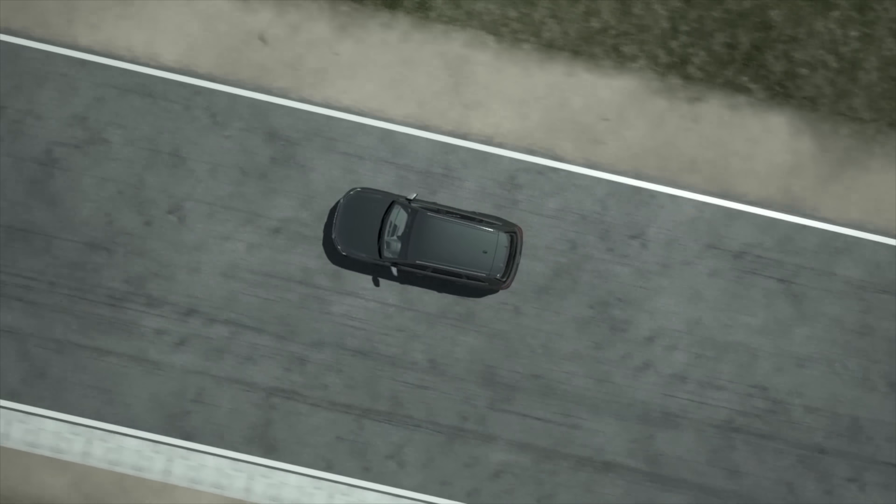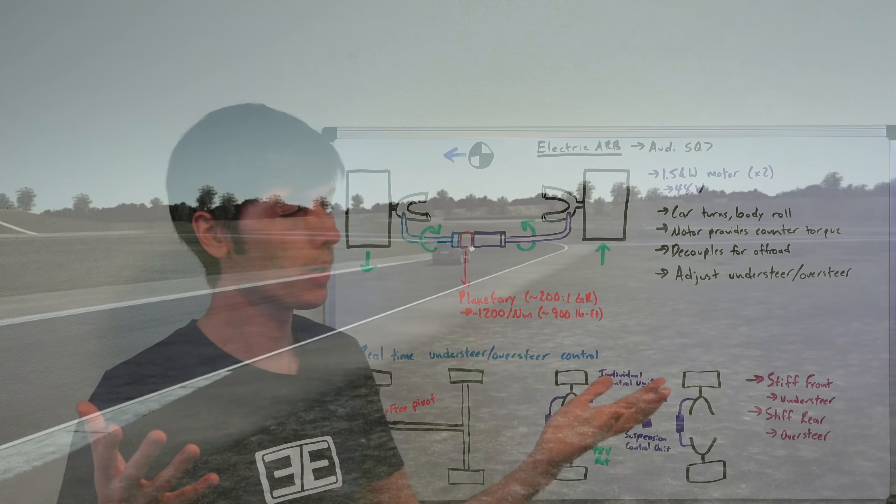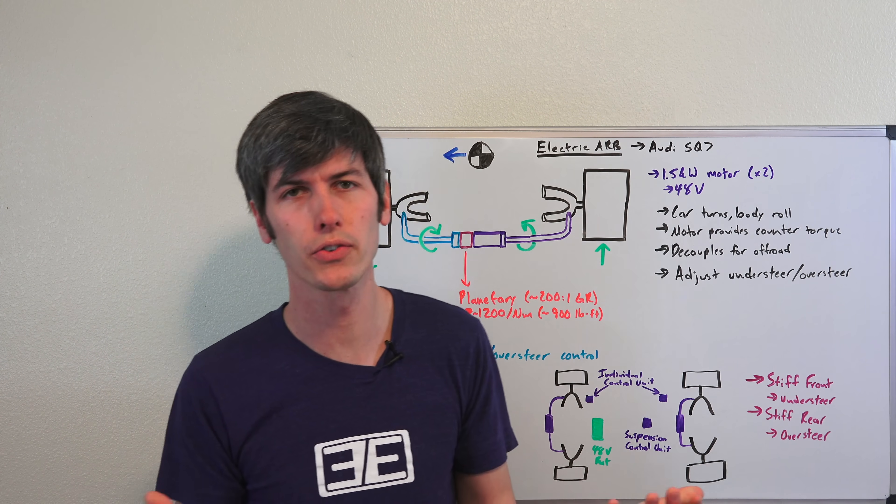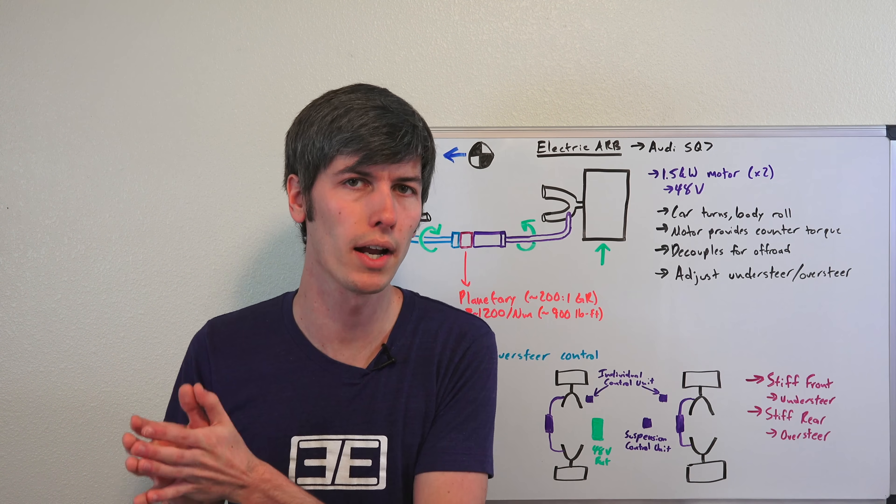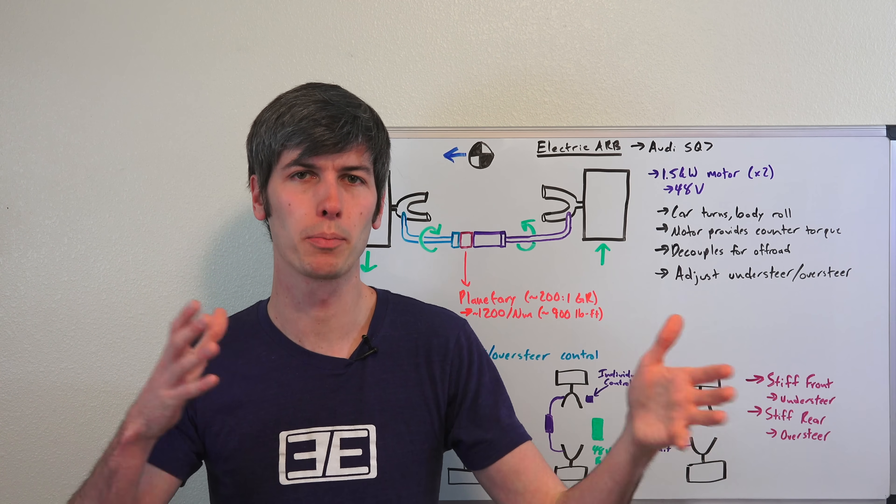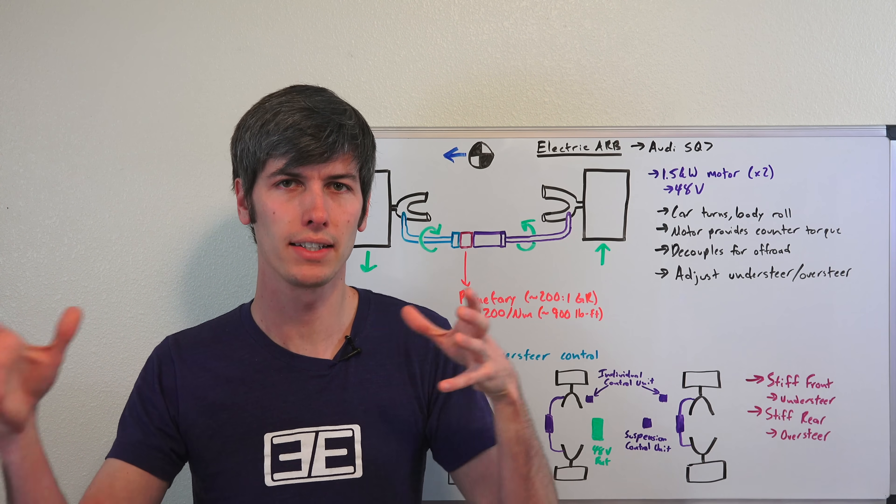So the basics: if you have a very stiff front anti-roll bar, you'll experience understeer. If you have a very stiff rear anti-roll bar, you'll experience oversteer. You can make adjustments between each to have the ideal handling vehicle from a dynamic standpoint.